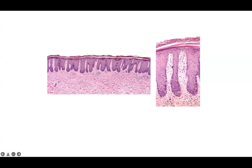You have dilated vessels within the dermal papilla, many of which the lumen directly abuts the basement membrane. You have hypogranulosis, overlying neutrophils in the stratum corneum, and in the dermis just a mild perivascular lymphocytic infiltrate. Abundant eosinophils should not be identified in classic examples of untreated psoriasis. So this is psoriasis.